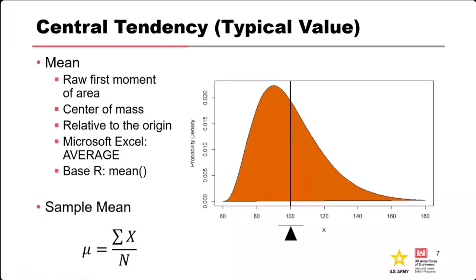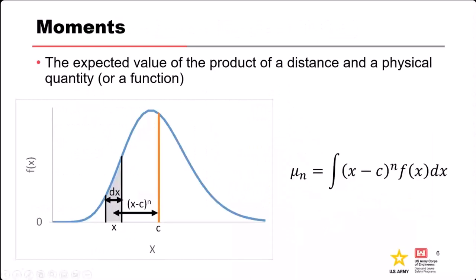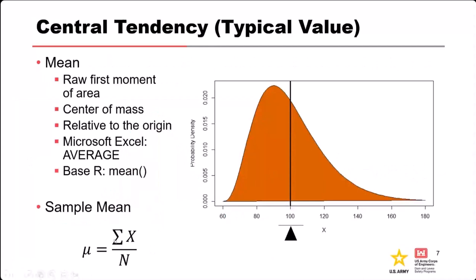How do we apply this in risk analysis and probability and statistics? The first moment, N equals 1, is the mean — formally called the raw first moment. First moment means the exponent is 1, and raw moment means it's relative to the origin. In engineering mechanics, this is the centroid or center of mass. In Excel, there's no mean function so you use the average function, which calculates the arithmetic mean. In R, there's a function called mean. The sample mean is simply: add up the data and divide by the number of data values.